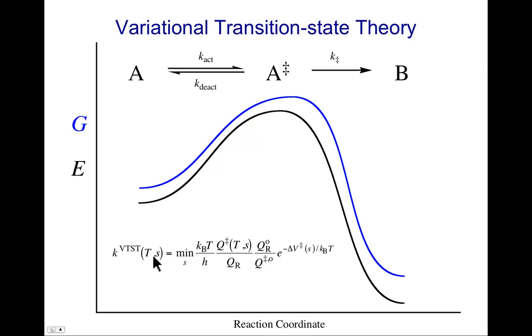So in variational transition state theory, the rate constant is expressed as a function not just of temperature, which already appeared in normal transition state theory, but also as a function of the reaction coordinate. And the rate constant will be the minimum, because we have to go to the maximum in free energy in order to get over that barrier, in order to have a rate, the minimum along the reaction coordinate of the transition state theory expression. So that's what differentiates variational transition state theory. It's variational, right? It looks for a minimum or a maximum associated with some parameter. In this case, it's the reaction coordinate parameter.